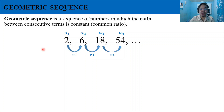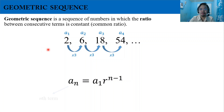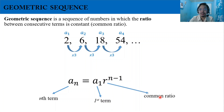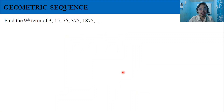Now let's look at the formula for a geometric sequence: a sub n equals a sub 1 times r raised to n minus 1. Here, a sub n is the nth term, a sub 1 is the first term, r is the common ratio, and n is the term position.